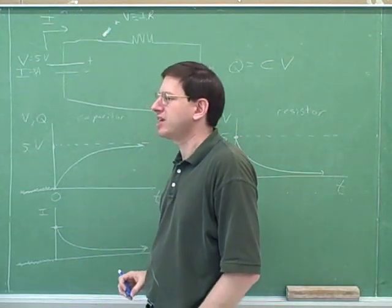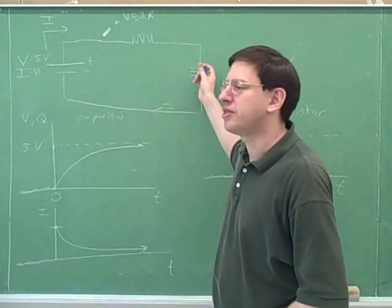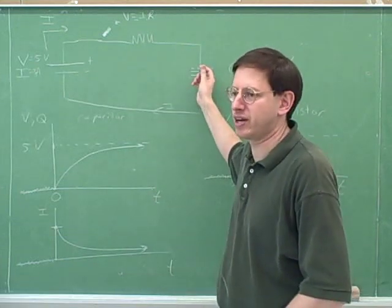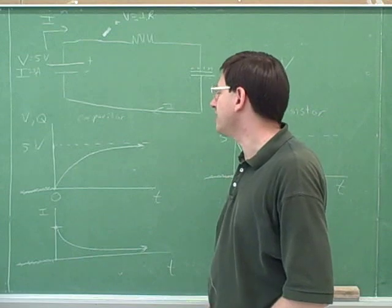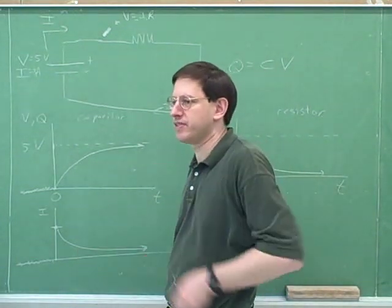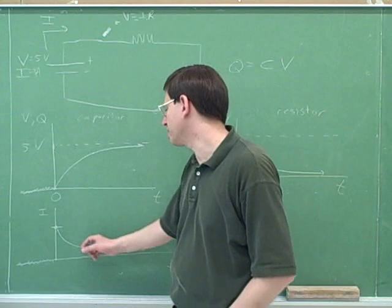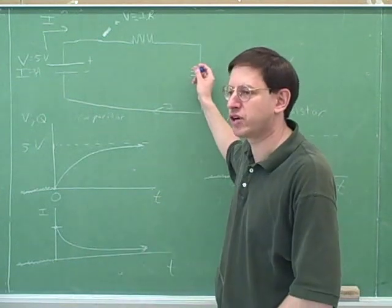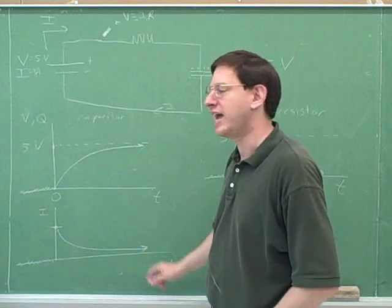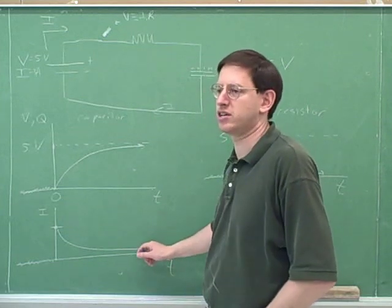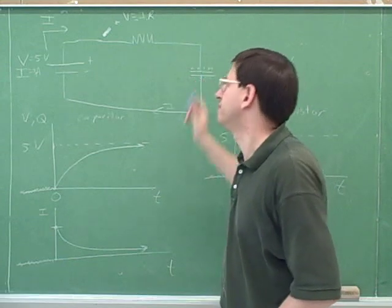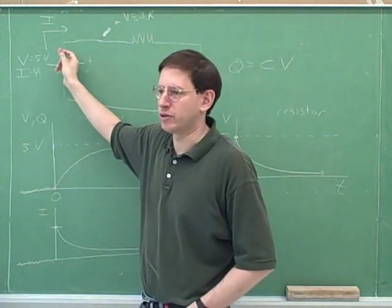The more positive charges we put here, the harder it is to put more positive charges — these positive charges don't like being crowded together on the positive plate. And you can see it got harder and harder for the battery to send current. Eventually, it's impossible for the battery to send current, and asymptotically the current goes to zero. There are so many positive charges on this plate that they prevent the battery from sending any more current through.